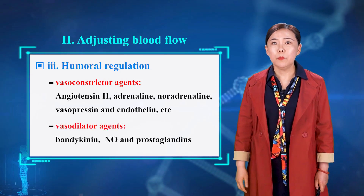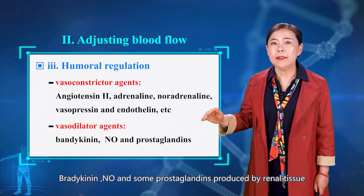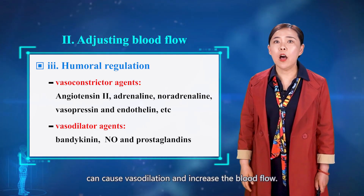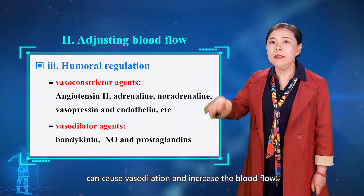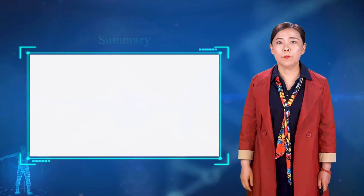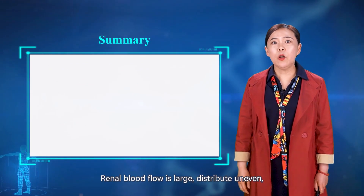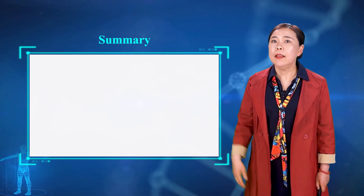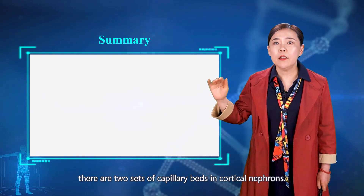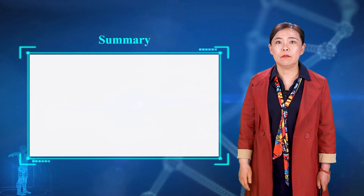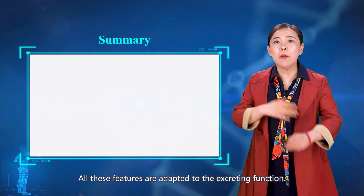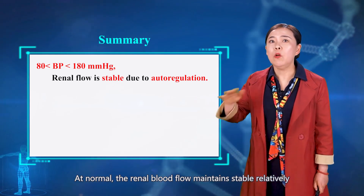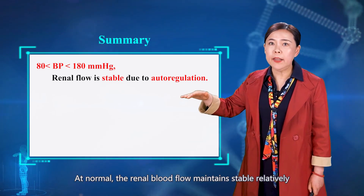Bradykinin, nitric oxide, and some prostaglandins produced by renal tissues can cause vasodilation and increase blood flow. In summary, renal blood flow is large and distributed unevenly. There are two sets of capillary beds in the cortical nephrons, and all these features are adapted with the urinary function. Under normal conditions, renal blood flow remains relatively stable due to autoregulation.